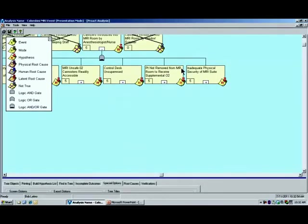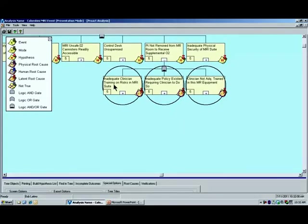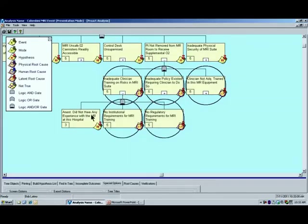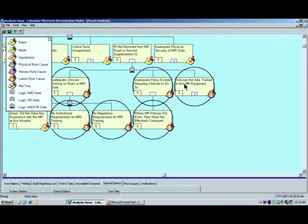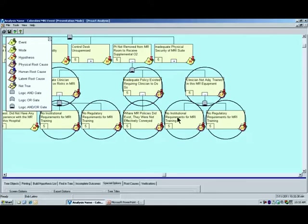Patient not removed from the MR room to receive supplemental oxygen. How can that be? The inadequate clinician training on risks in the MRI. Why? The anesthesiologist did not have any experience with the MR at this hospital. No institutional requirements for MRI training and no regulatory requirements. An inadequate policy existed requiring the clinician to do so. Where MRI, where MR policies did exist, they were not effectively conveyed. The clinician was not adequately trained in this MR equipment. Well, how can that be? No institutional requirements, no regulatory requirements. So you can see there's a lot of loopholes here allowing this particular event to have occurred.